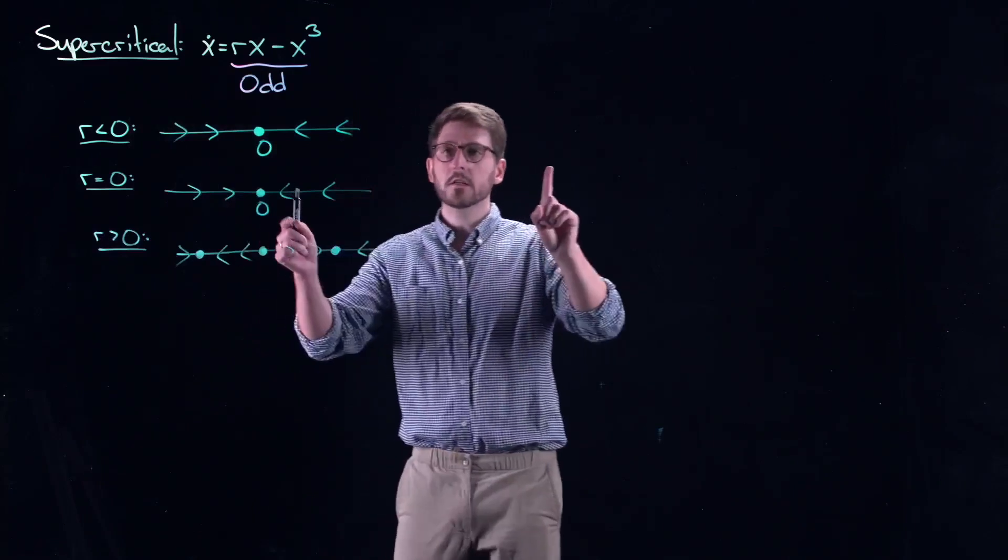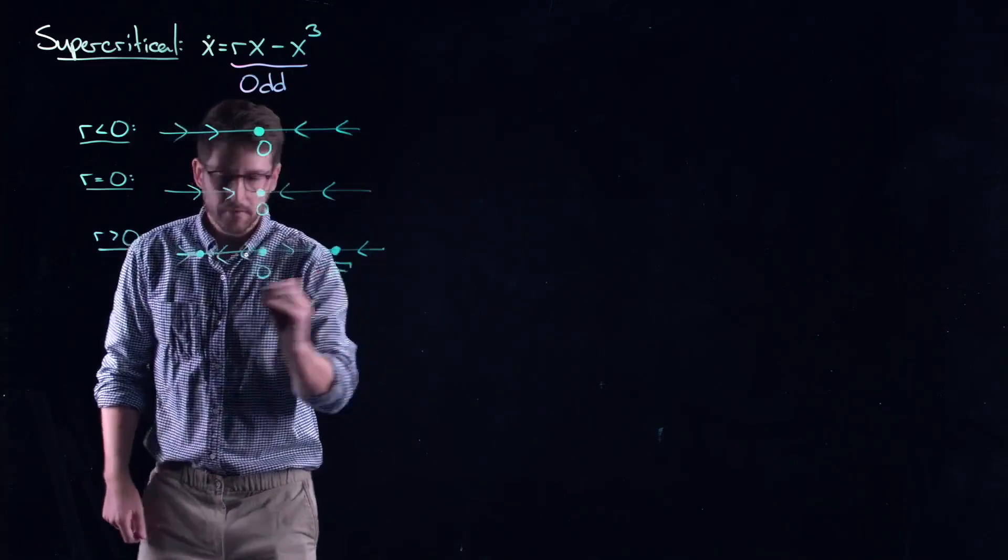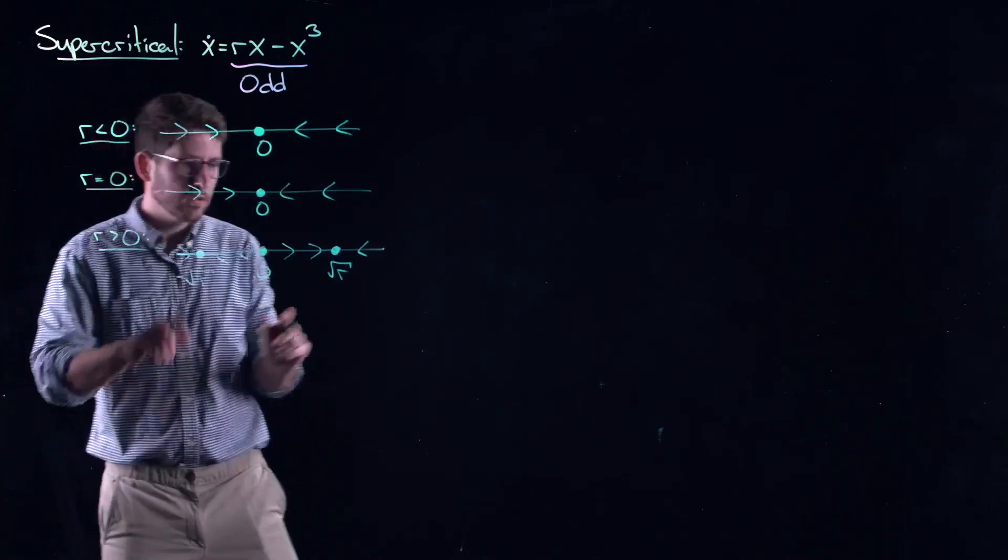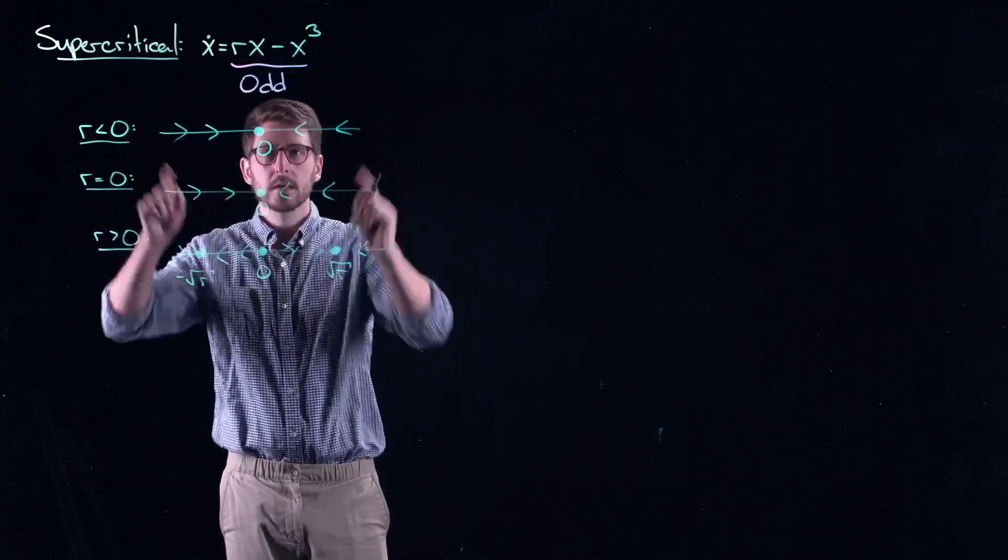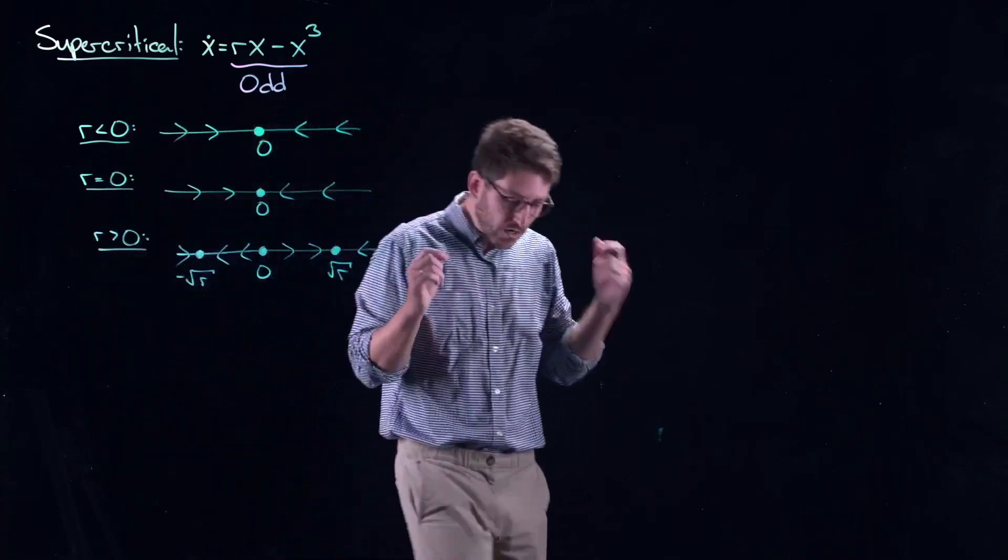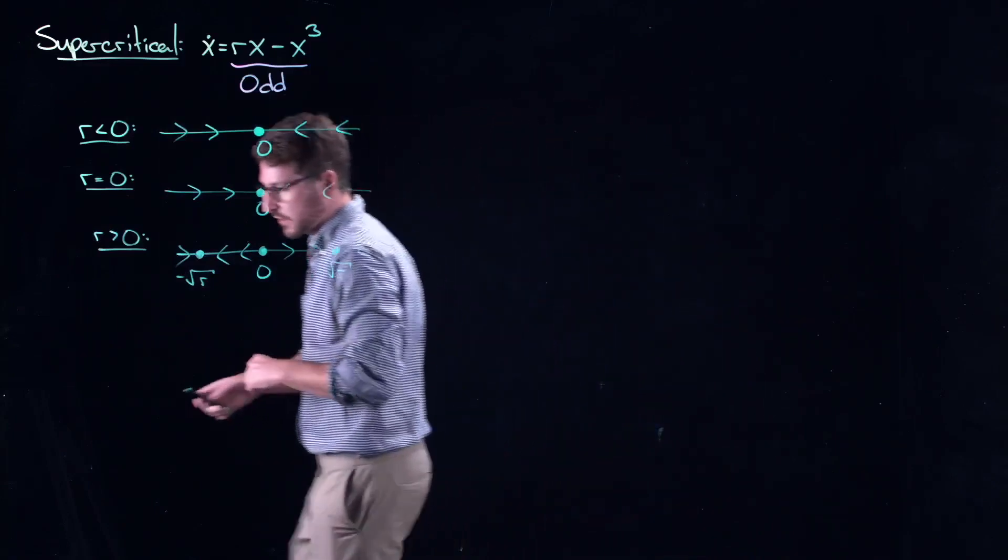First thing you can see here is we have symmetry in the system. You get this sort of flip symmetry that's always happening in your dynamical system. That is the odd symmetry coming through in your supercritical pitchfork bifurcation.